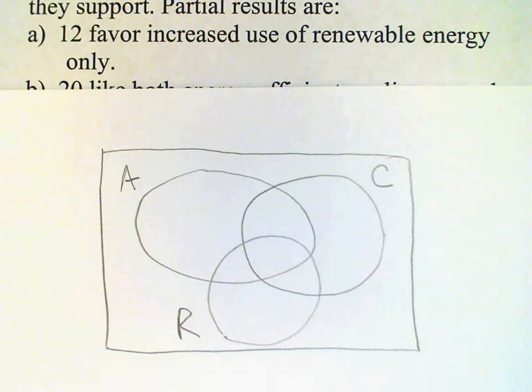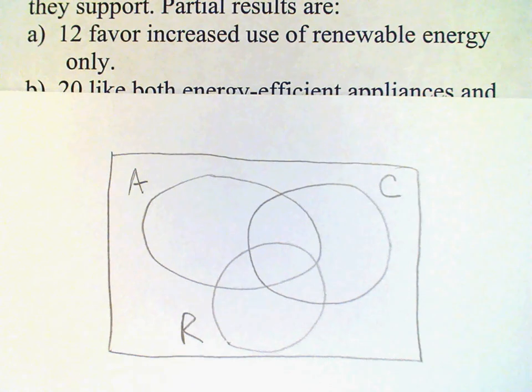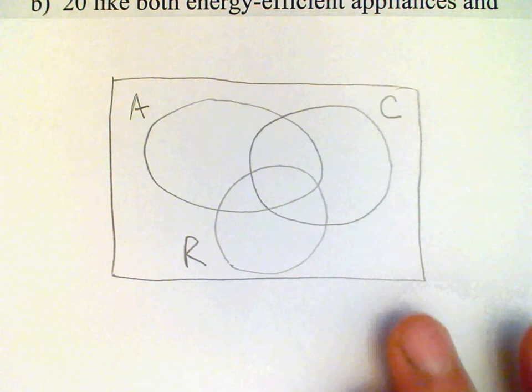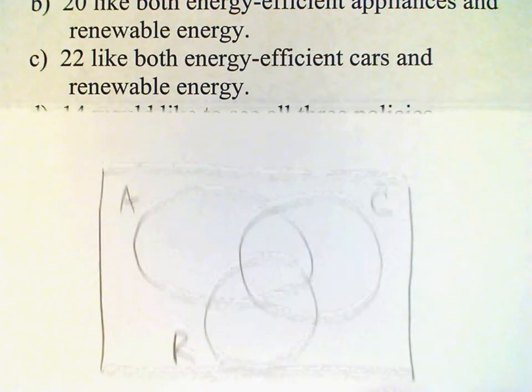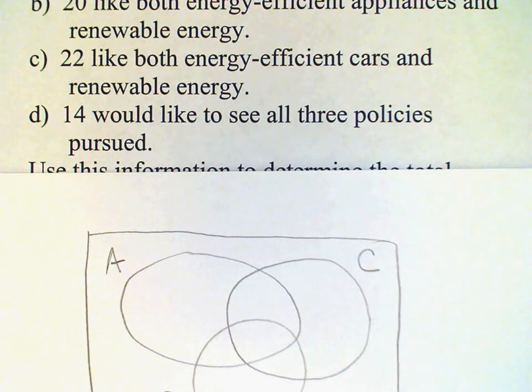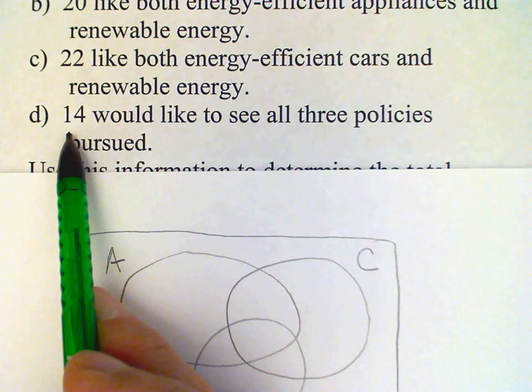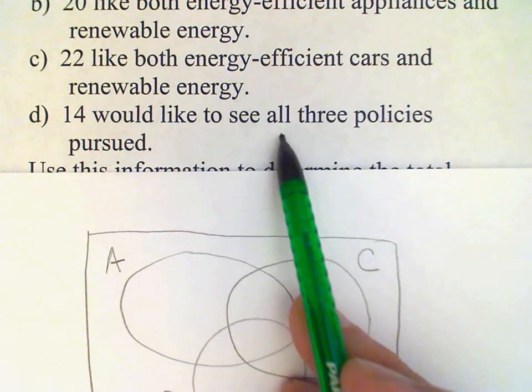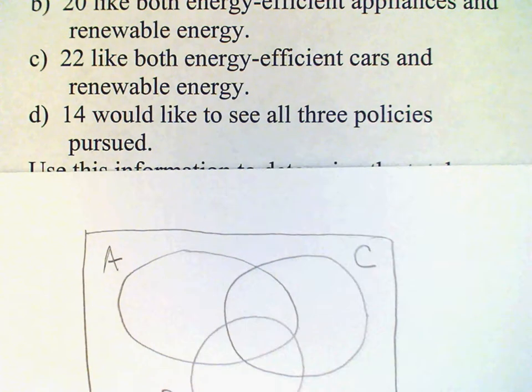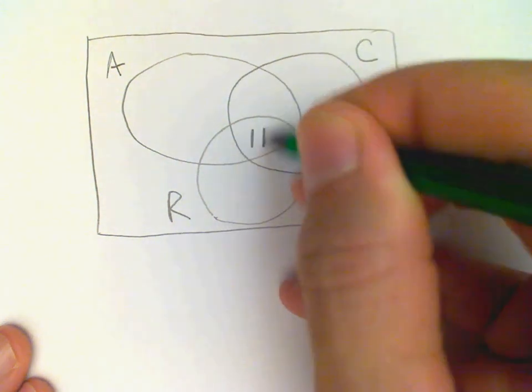The basic technique when analyzing using Venn diagrams is you should try to start in the middle of the diagram and work outward. That will usually be the best way to analyze your results. So the middle is identified by this word here: all three. All three policies, 14. So that means that number 14 is going to go in here.